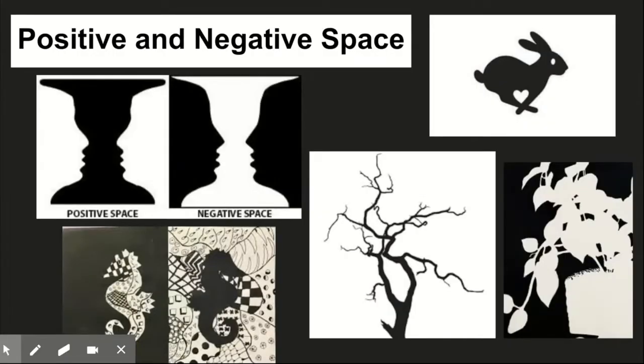Just a quick review on positive and negative space. We remember our optical illusion of the two faces and the vase. We also remember that certain things can show up in our negative space, which creates an optical illusion.